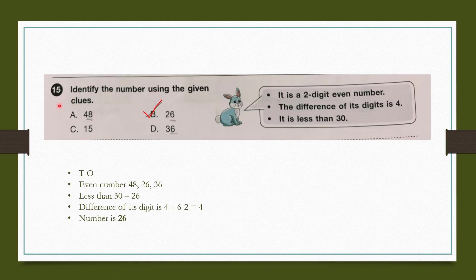Question number 15: Identify the number using the given clues. It is a 2-digit even number less than 30, and the difference of its digits is 4. Even 2-digit options could be 46, 26 or 36. Since 15 is odd, possible answers are 26 and 36. Only 26 is less than 30. The digits 6 and 2 have a difference of 4. All conditions are satisfied with 26. Our answer is 26, which is option B.